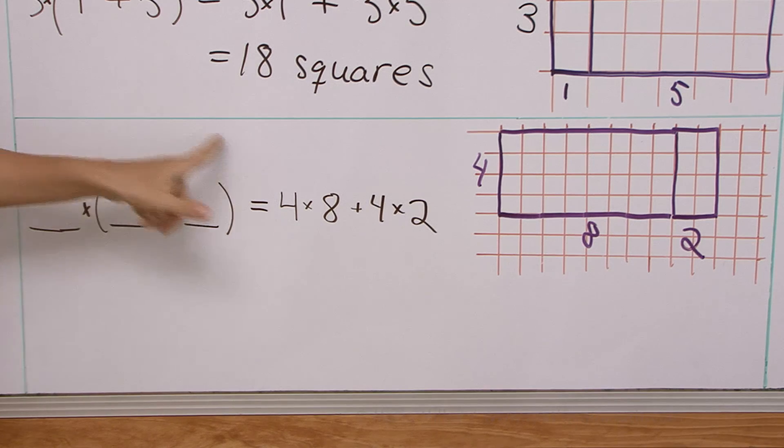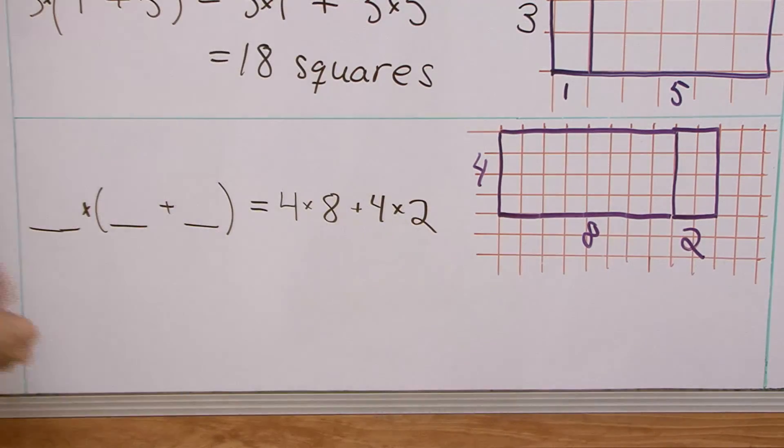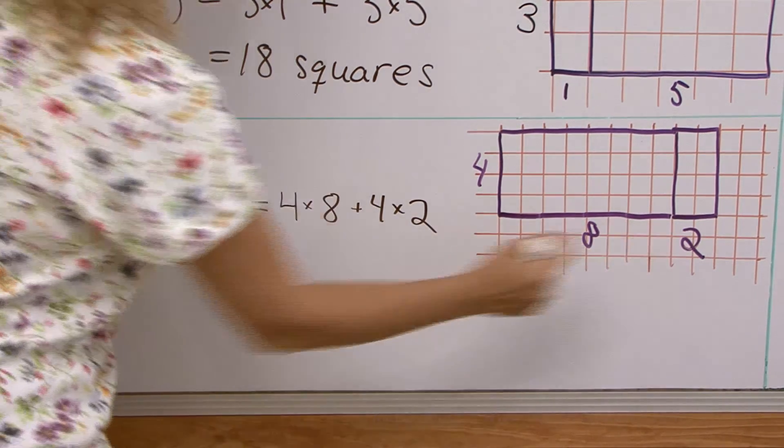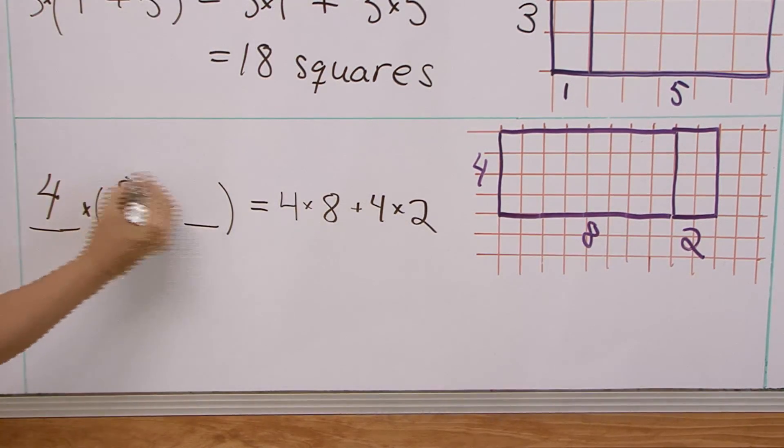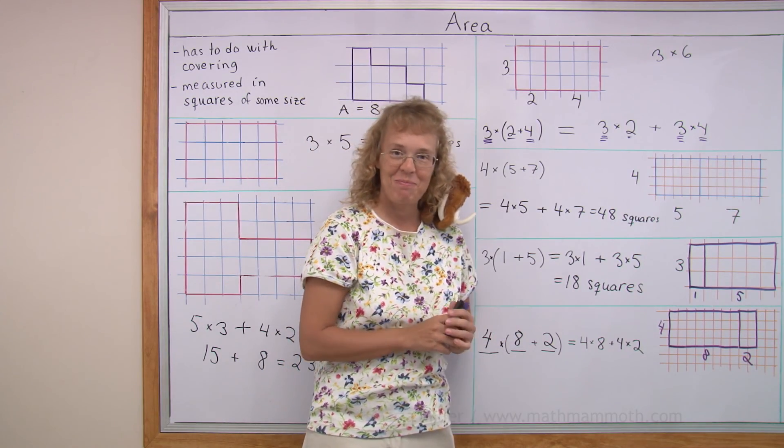Then what numbers do we put here? This is the area of the whole big rectangle. Right? This one here. Which is 4 by 10. But we're going to write it as 4 times. And then this is the sum. This side is broken as sum of 8 and 2. 8 plus 2. Right? Did you get that? Good job.